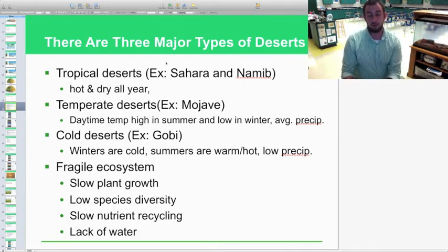Temperate deserts are the Mojave, kind of like in our North America. Looking at daytime temperatures, very high in the summer, very low in the winter, and you have some average precipitation. You do get some moisture. Then you have the cold deserts, like the Gobi. Winters are very cold, summers are warm and hot with low precipitation.